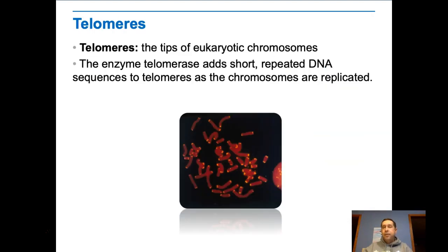One of the things we know about DNA and cell division is that when an organism is an embryo, there's an enzyme called telomerase that adds these caps at the end of the eukaryotic chromosomes called telomeres.